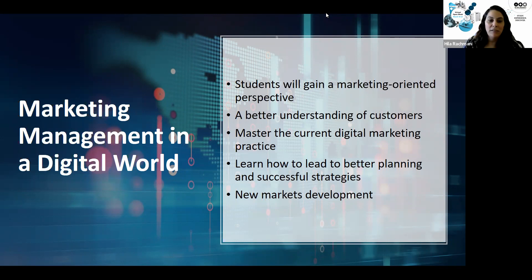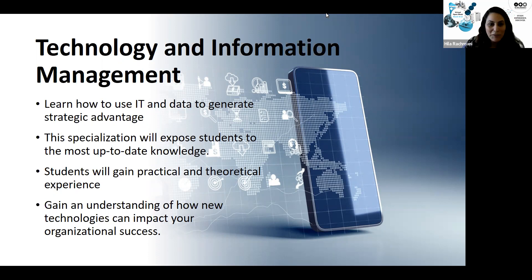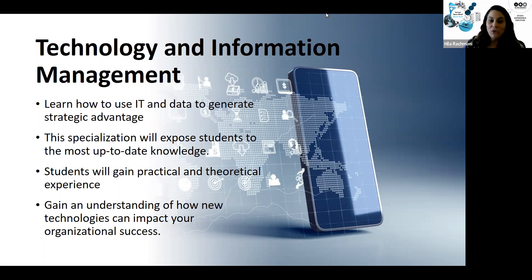The second specialization is Technology and Information Management, where you'll learn how to use data to generate strategic advantage for your organization, gaining both practical and theoretical experience with up-to-date knowledge. Again, no prior background in technology is required. If you're unsure which path to take, the General MBA pathway allows you to choose courses from both specializations.